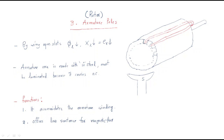The slots are useful to carry the winding. This is an open type slot. You need to know the difference between open type slots, semi-open type slots, and closed type slots. If the slot is open at the top, it is called an open type slot. If the slot is partially closed, it is called a semi-closed type slot.